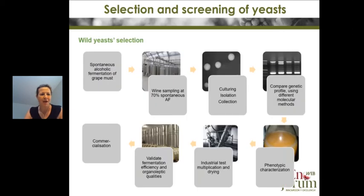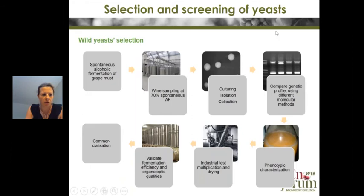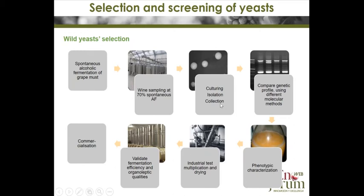I will present the different steps for selecting and screening analogical yeast. The traditional approach to develop a yeast was to select one yeast from grape must or from a spontaneous alcoholic fermentation. Samples are generally taken at 70% of fermentation to select Saccharomyces cerevisiae.